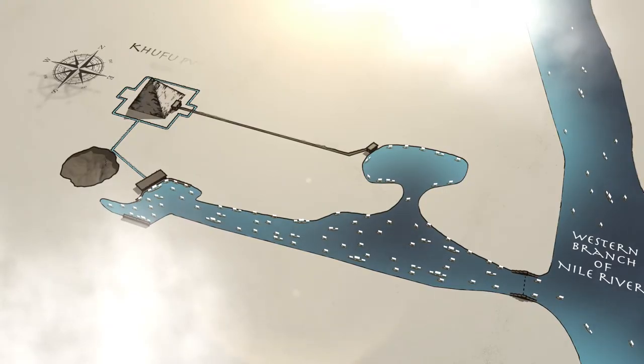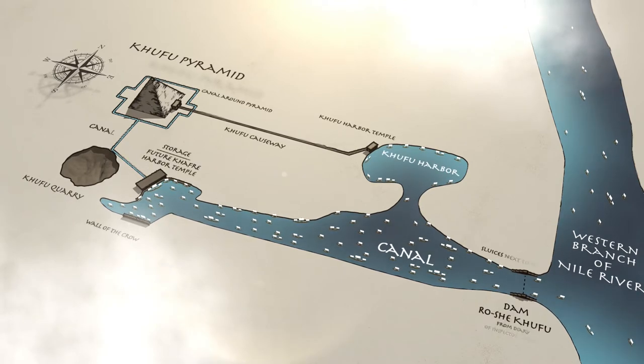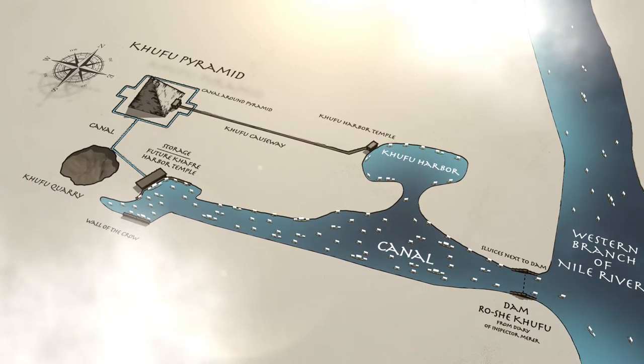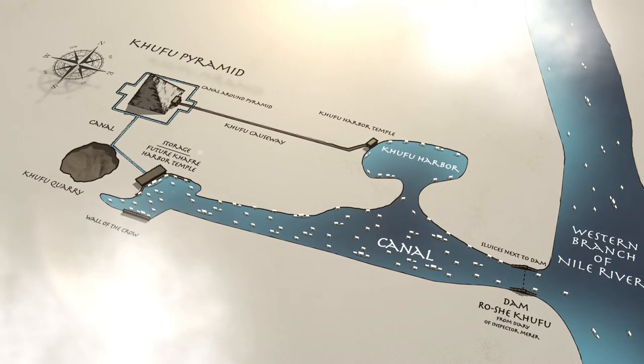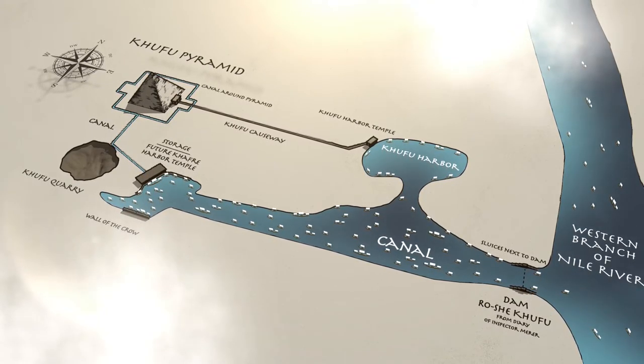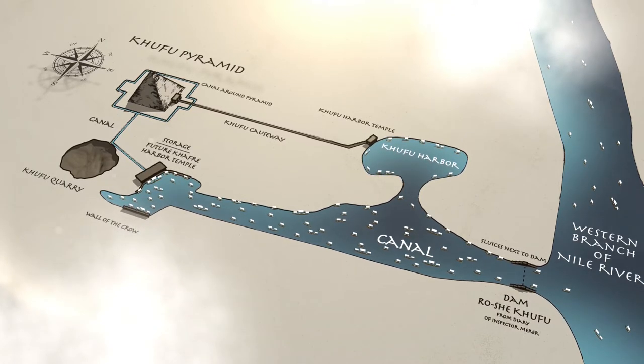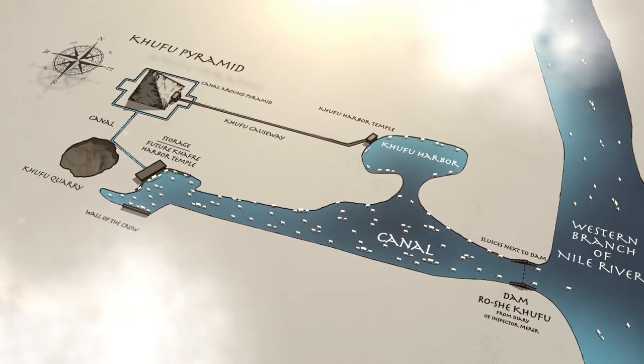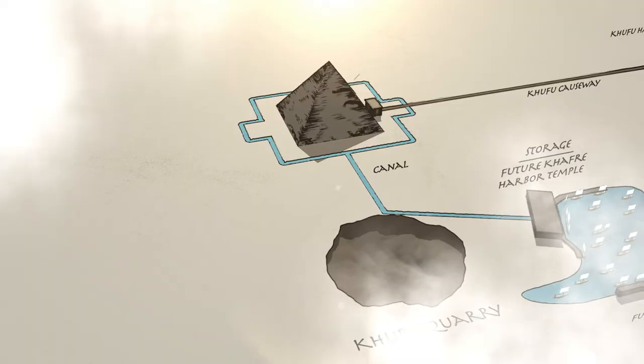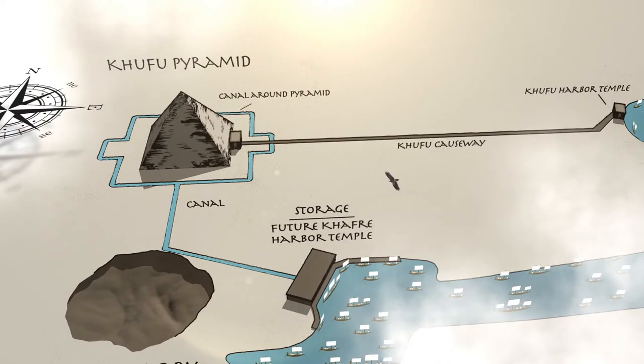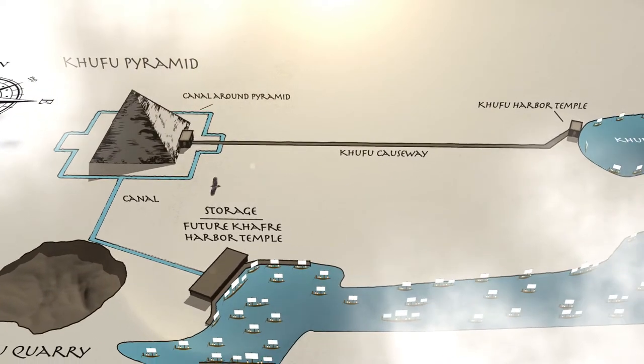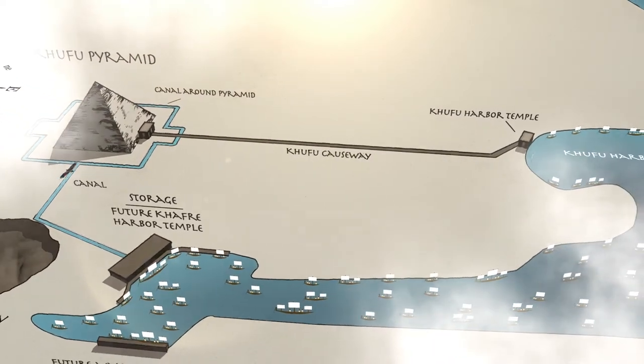During this time, large boats were delivering massive granite for the interior pyramid chambers from Aswan, and casing limestone for the surface of the pyramid from Tura. The Egyptians were unloading the cargo close to the Khufu pyramid from the Khufu quarry side. This proposed site was near the current Khafre Harbour temple location. In anticipation of dam construction, the Egyptians prepared stones and clay at the top of the bank where the dam was to be built.